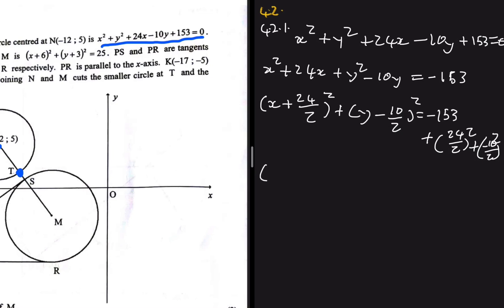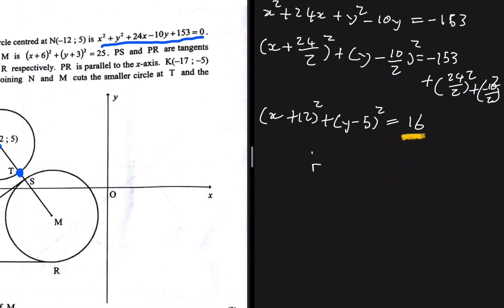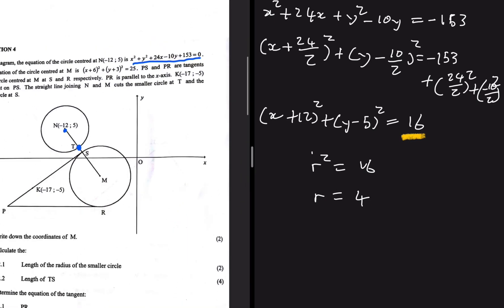Computing that gives us (x+12)² + (y−5)² = 16. We're looking for the radius, so since r² = 16, we get r = 4. That's the radius of the smaller circle.